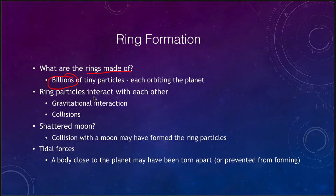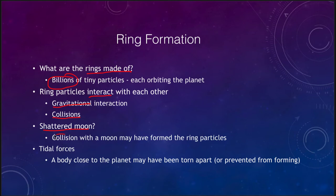The ring particles interact with each other by gravity, which keeps them together, and through collisions. The particles will collide as they orbit, giving us the structures we see within the rings. Could these be a shattered moon? A collision with a moon might have formed the ring particles. If a large object crashed into a moon — and recall that these Jovian planets all have lots of moons — that could have expelled a lot of ring particles out into space that could have been captured in a ring.